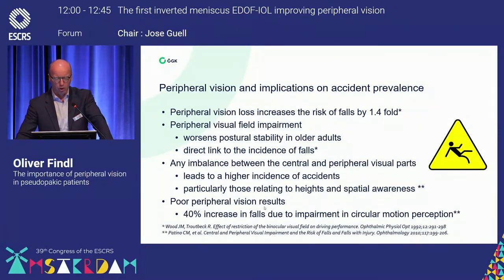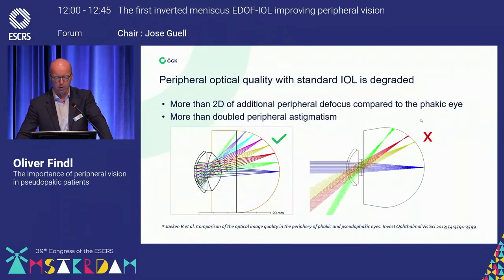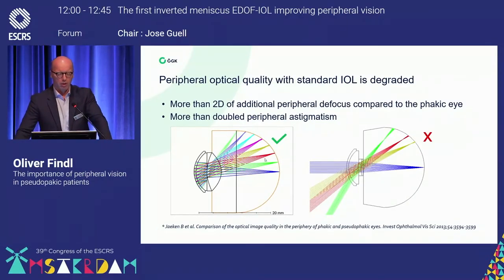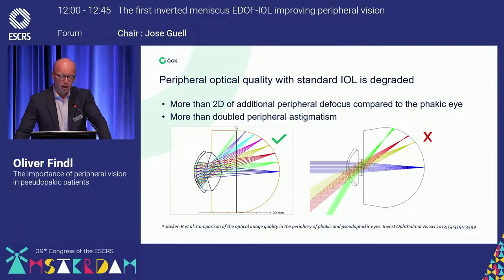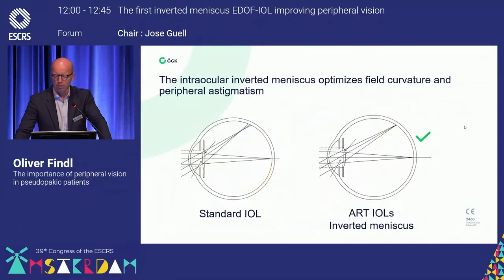Poor peripheral vision increases the risk of falls, especially due to impairment of circular motion perception — and you've seen a similar slide from Pablo just before. The issue is that we have a defocused image in the peripheral retina with a standard IOL. Ideally we would like to have a much better image and better contrast for better peripheral vision. Astigmatism also plays a major role, as you get a lot of astigmatism especially in the peripheral retina.